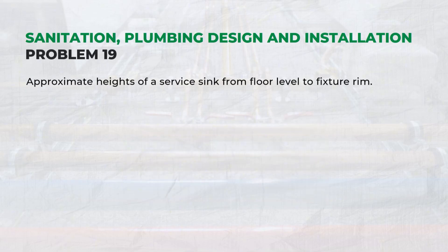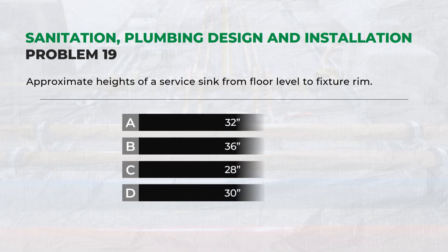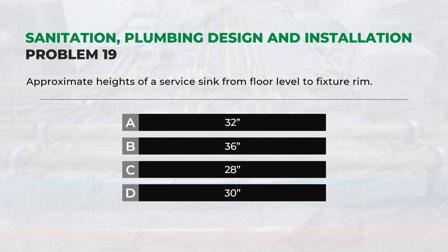What are the approximate heights of a service sink from floor level to fixture rim? — Answer: B. 36 inches.